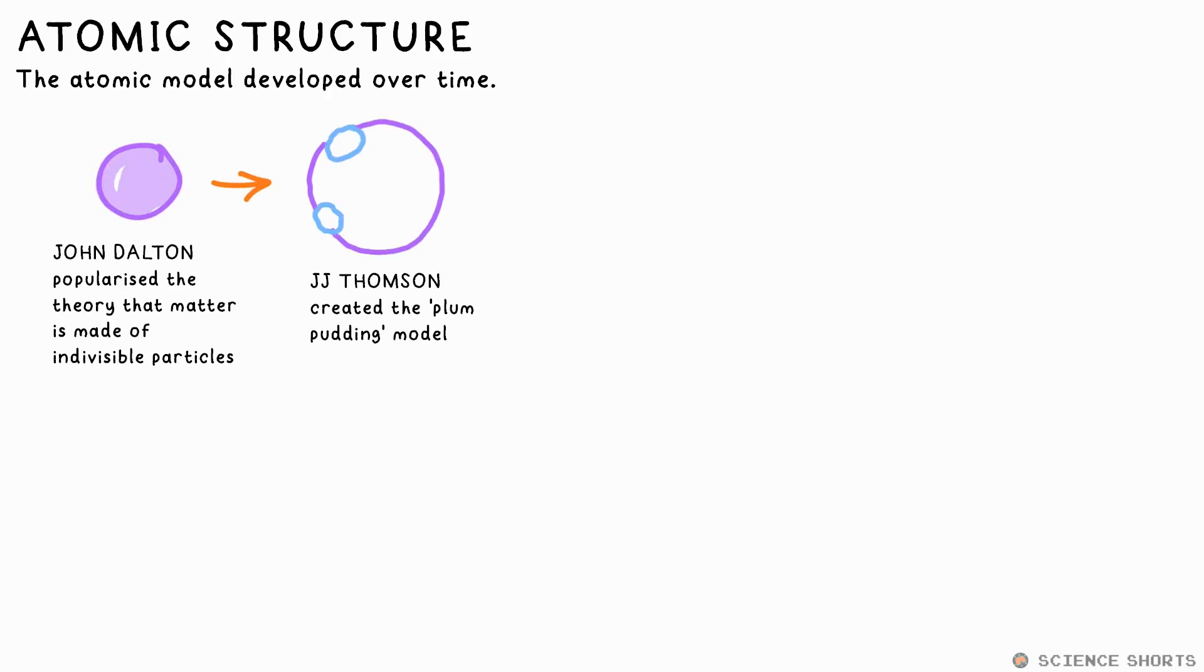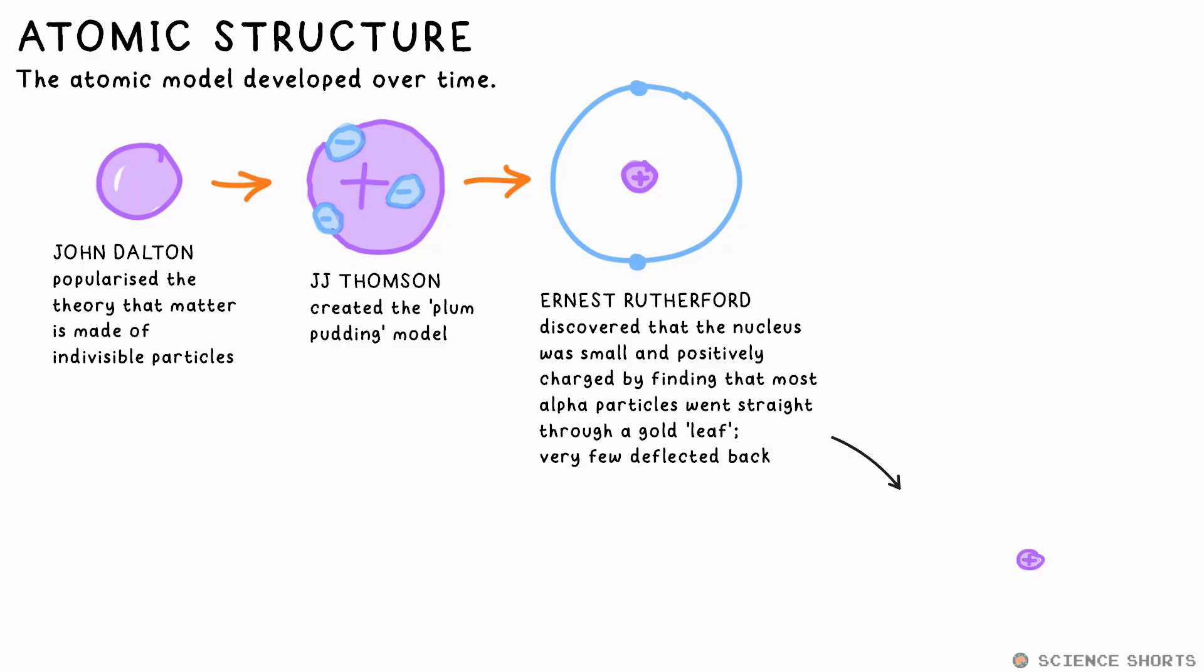The idea of what atoms are like came about gradually. JJ Thompson discovered that atoms are made up of positive and negative charges. He came up with the plum pudding model of the atom, a positive charge with lots of little negative charges dotted around it, electrons. It was then Ernest Rutherford who found that the positive charge must actually be incredibly small. We now call this the nucleus. He discovered this by finding that most alpha particles fired at a thin leaf of gold atoms went straight through, proving that atoms must be mostly empty space.